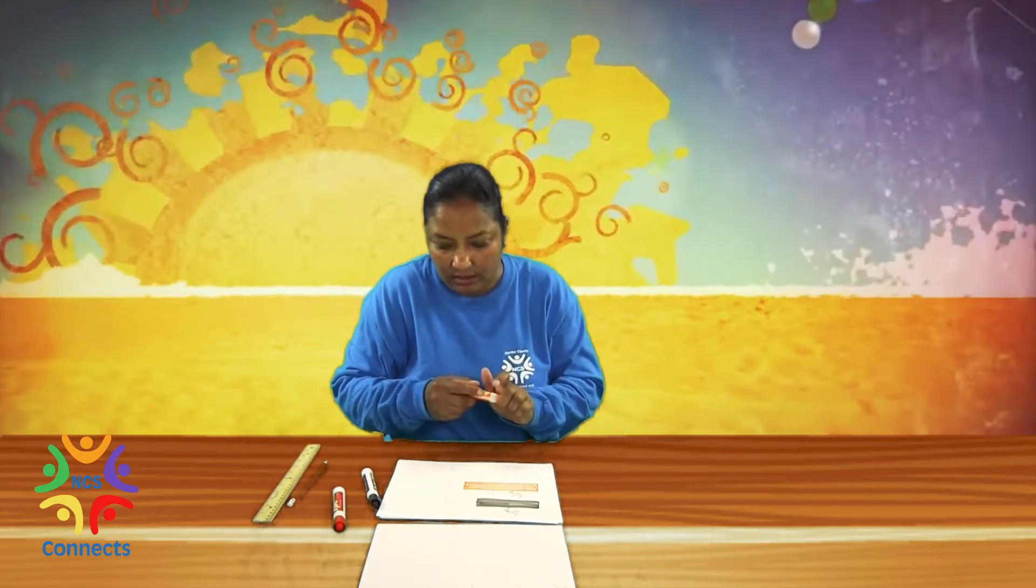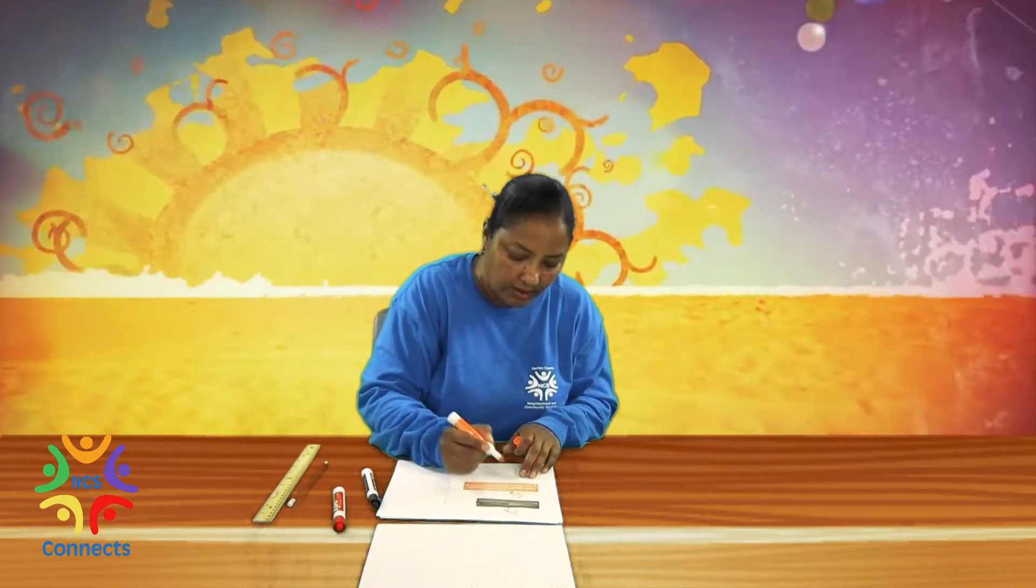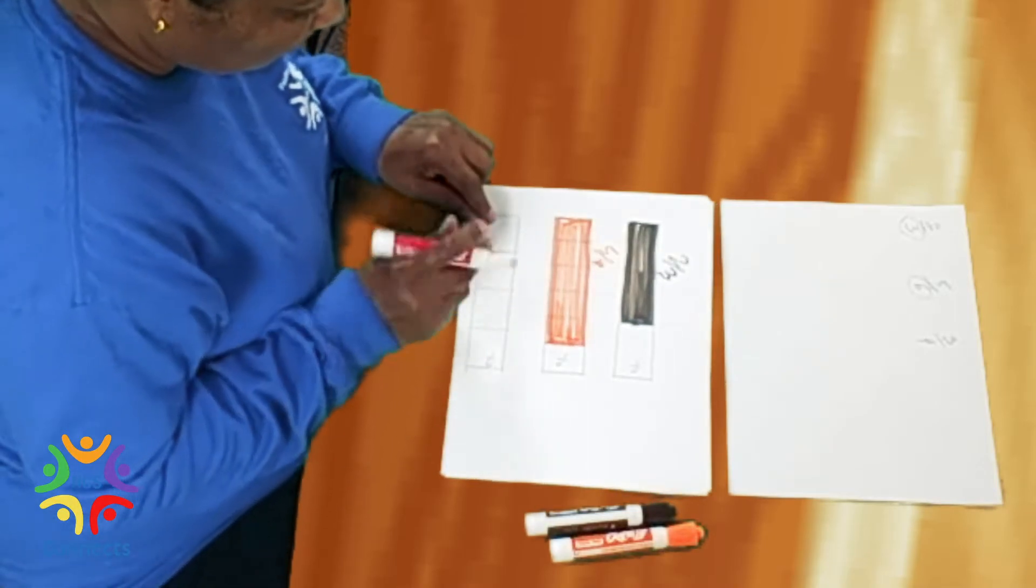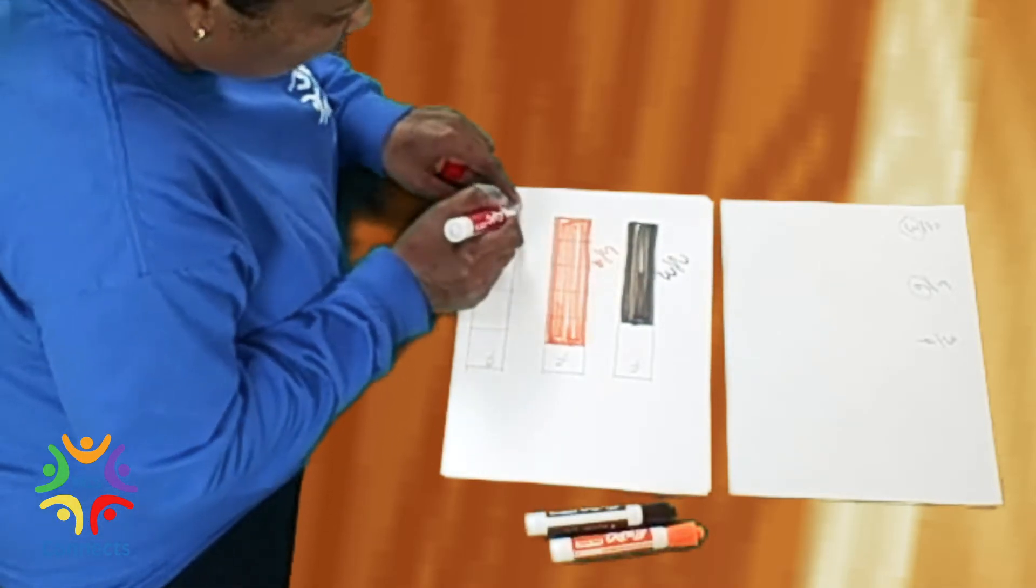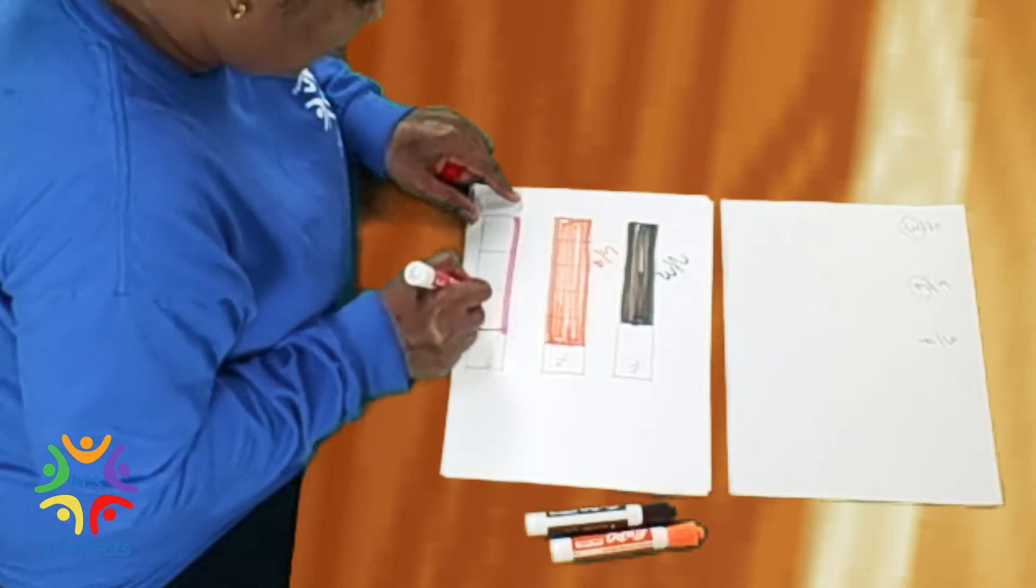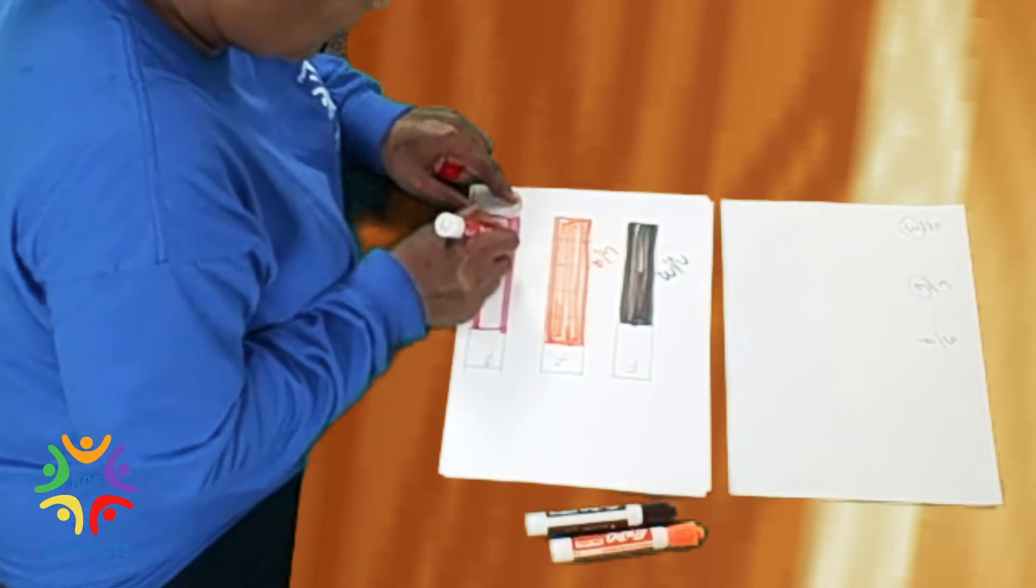And then we have the last one, which is three-fourths. That's one, two, three. Three out of four is three-fourths. I'm gonna color the three-fourths.